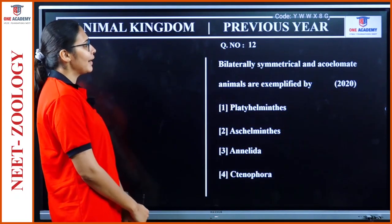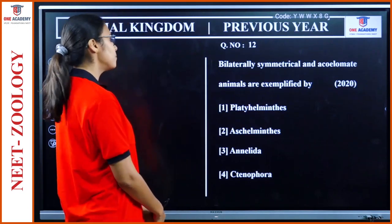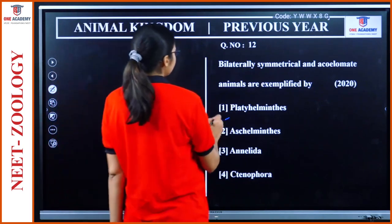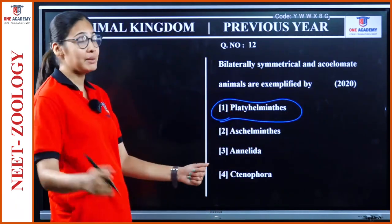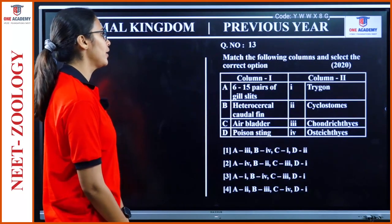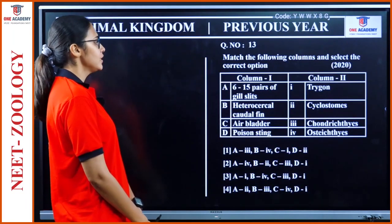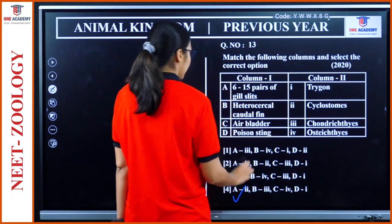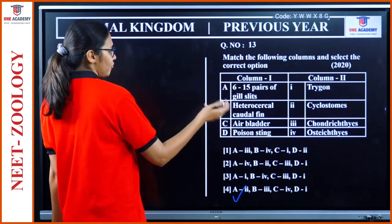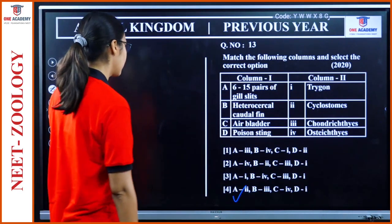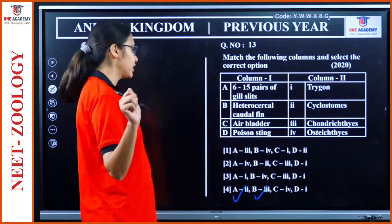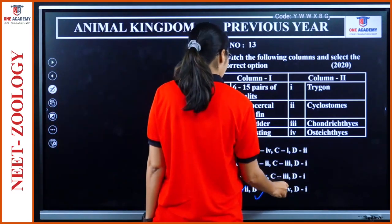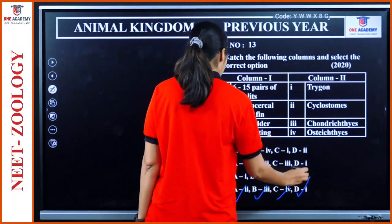Question 12: 'Bilaterally symmetrical and acoelomate animals are exemplified by?' Platyhelminthes are bilaterally symmetrical and acoelomate. Other clues: 6-15 pairs of gill clefts in cyclostomes, heterocercal caudal fins in Chondrichthyes, air bladder in Osteichthyes, and poison sting in Trygon. Option 4 is the right answer.